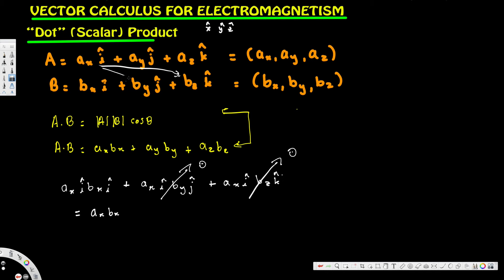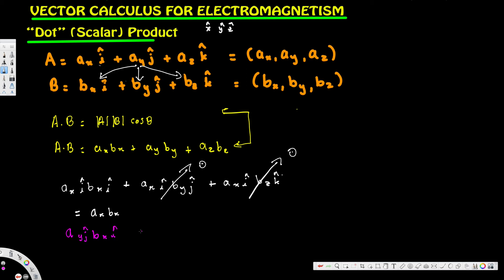Similarly, dotting ay·j-hat with all components of B gives: ay·j with bx·i (zero, perpendicular), plus ay·j with by·j (equals ay·by since j·j = 1), plus ay·j with bz·k (zero, since j and k are 90°). So the result from the ay component is just ay·by. That's how the component-wise dot product works. I hope this helps, thanks for watching.